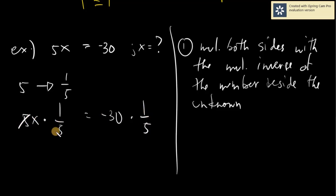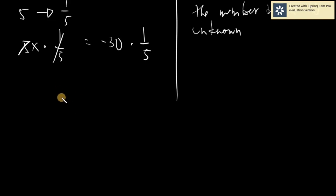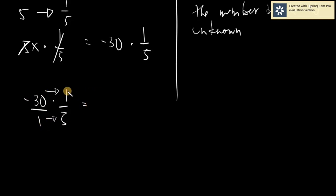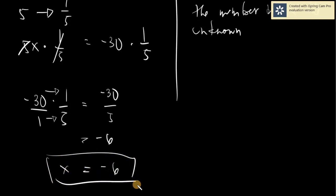Multiply by 1/5 on both sides. The 5 and 1/5 cancel out, leaving x. Then we ask: what is negative 30 times 1/5? If you're not familiar with multiplying fractions, it goes like this: numerator times numerator, denominator times denominator. Negative 30 times 1 is negative 30; 1 times 5 is 5. So negative 30 divided by 5 gives negative 6. Therefore, x equals negative 6, and that is your solution.